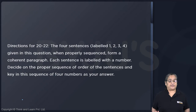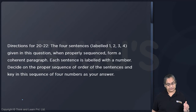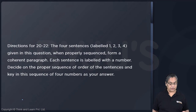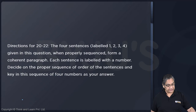This is a para jumble question — para jumbles without options. The directions are always the same: the instructions are always the same. Four sentences labeled 1, 2, 3, 4 are given, which when properly sequenced form a coherent paragraph. Each sentence is labeled; decide on the proper sequence and key in the sequence.